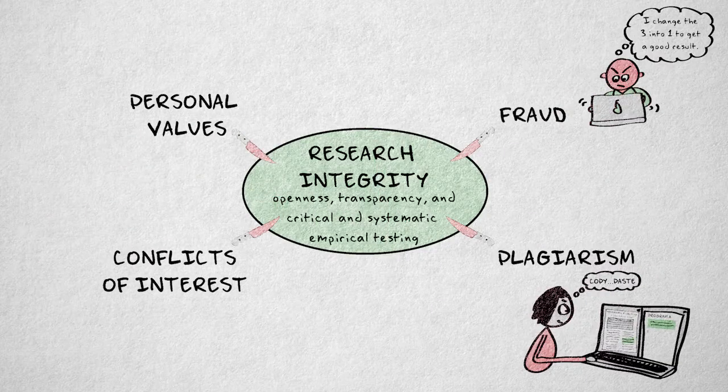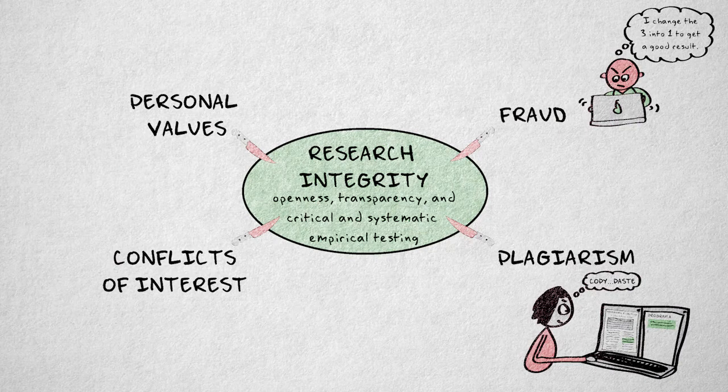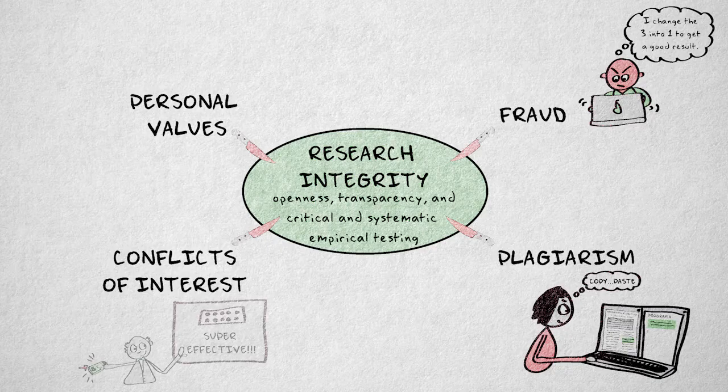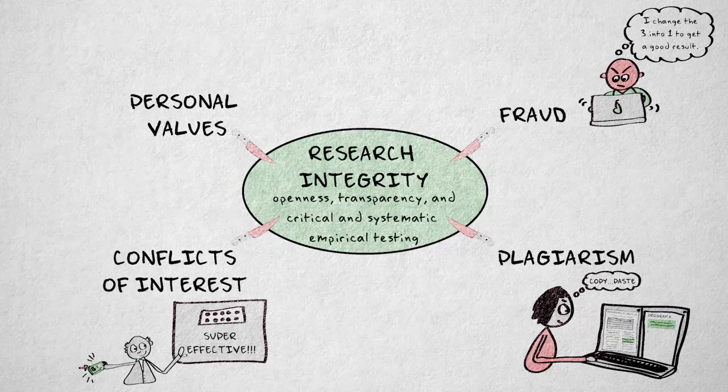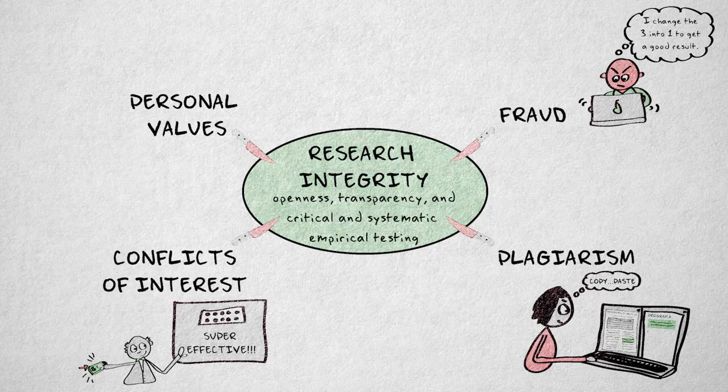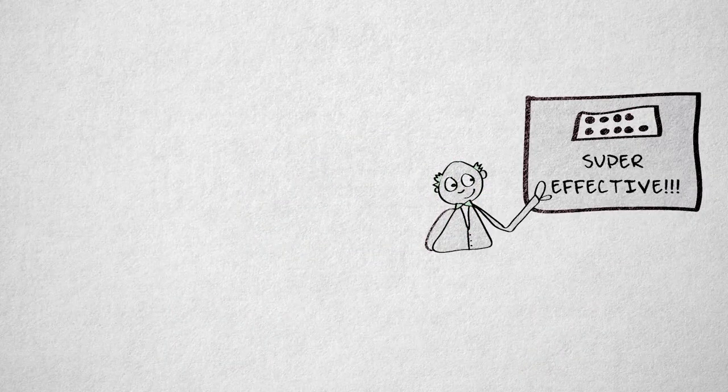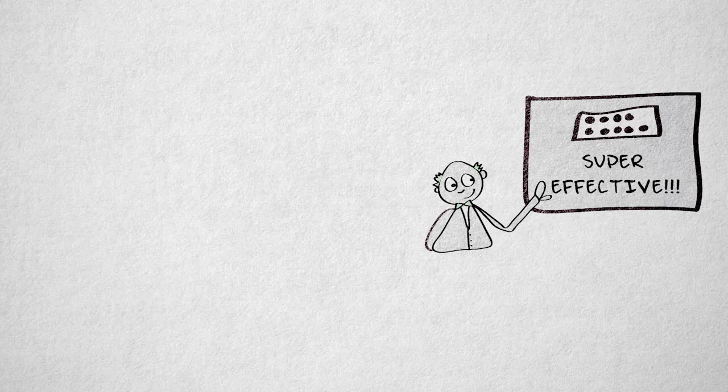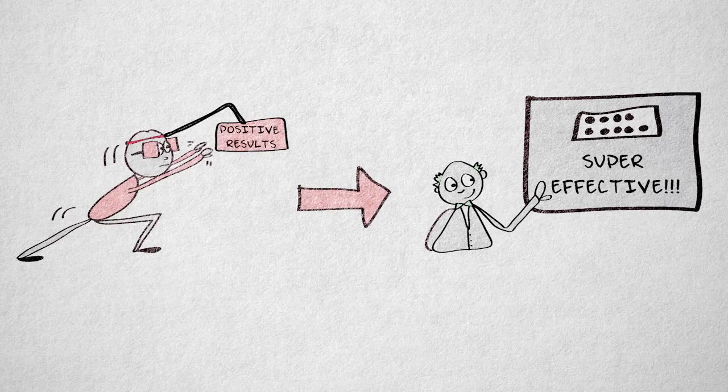A conflict of interest is a violation of research integrity that is most frequent in the medical sciences. Researchers are funded, for example, by pharmaceutical companies that have a huge interest in showing a drug is effective. Whether consciously or unconsciously, researchers can be swayed to present results more favorably. This is in part because it's also in their best interest to show positive results.